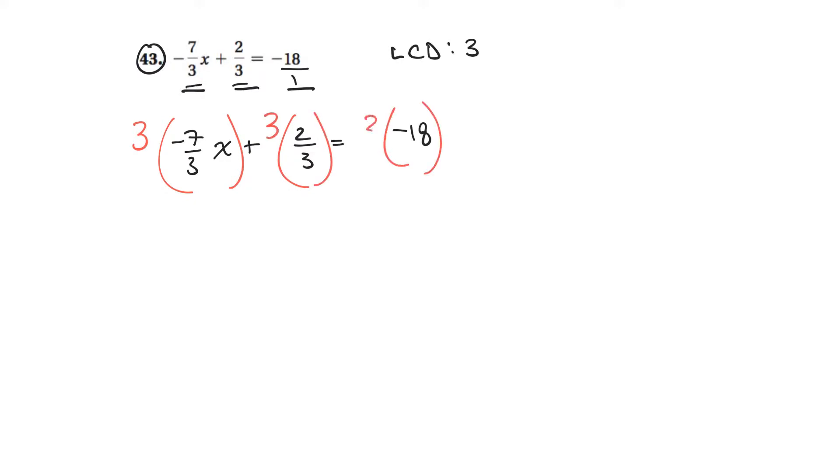So you have to do them all. You can't just do the 2 that have the fraction on them. So for the first ones, the 3s cancel, so I'm left with negative 7x. The next one, same thing, the 3s cancel, so I'm left with just 2. And then the next one is 3 times 18. I'm thinking that's about negative 54.